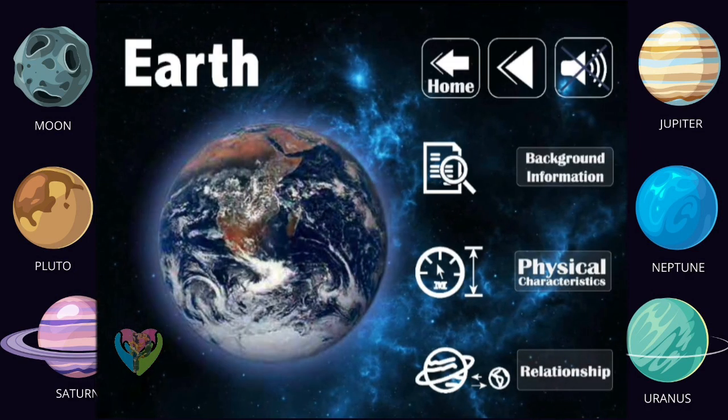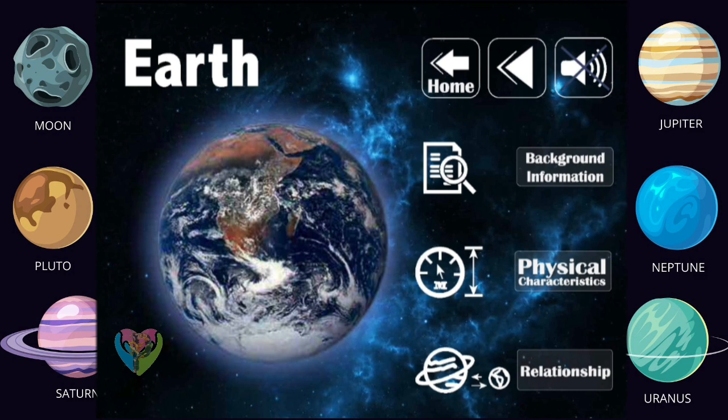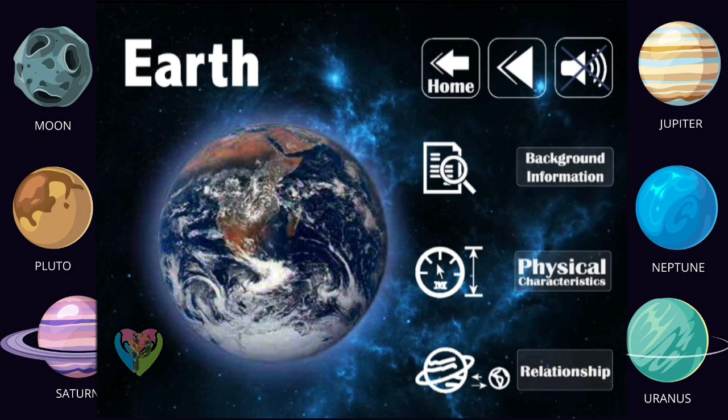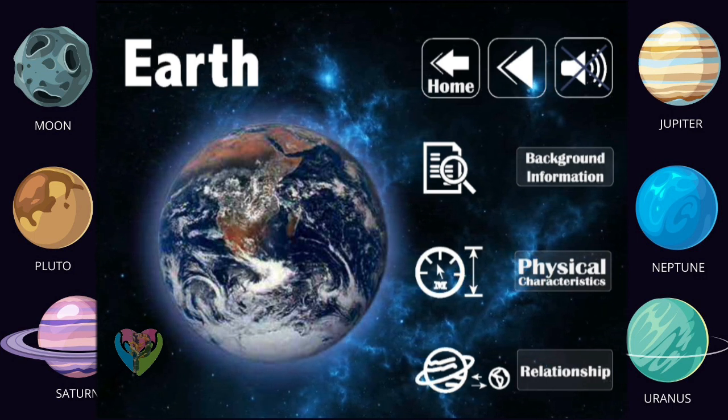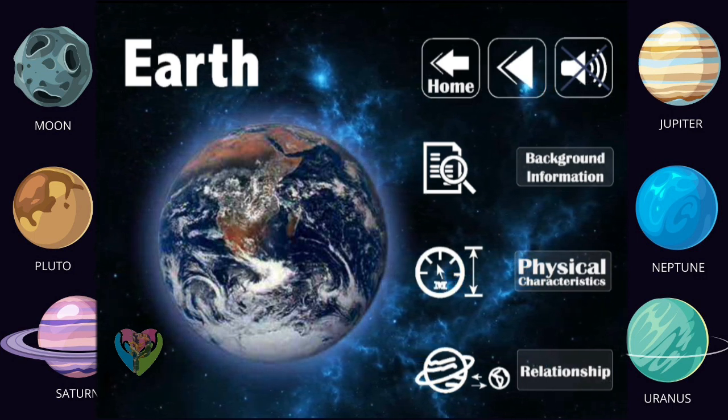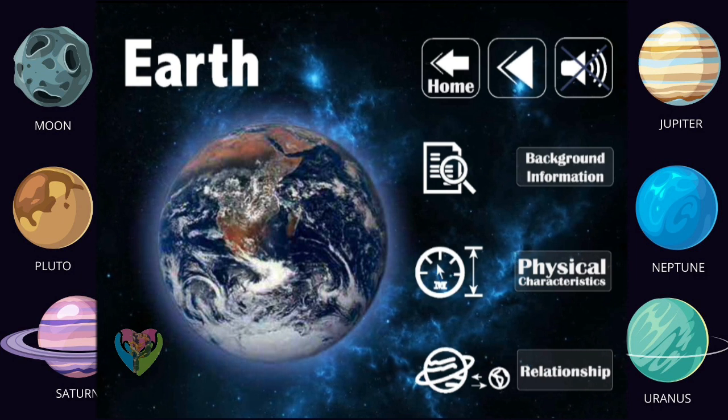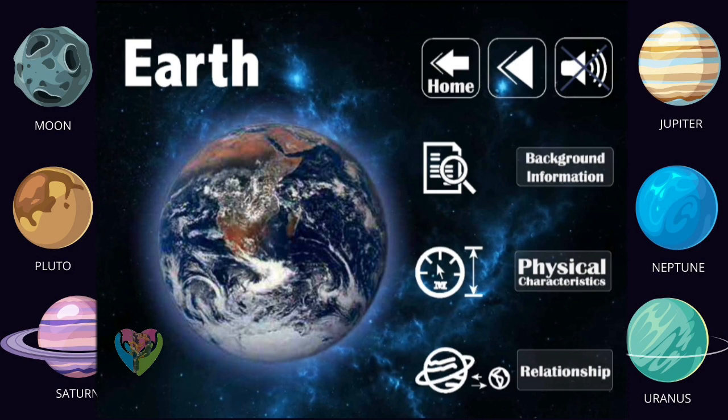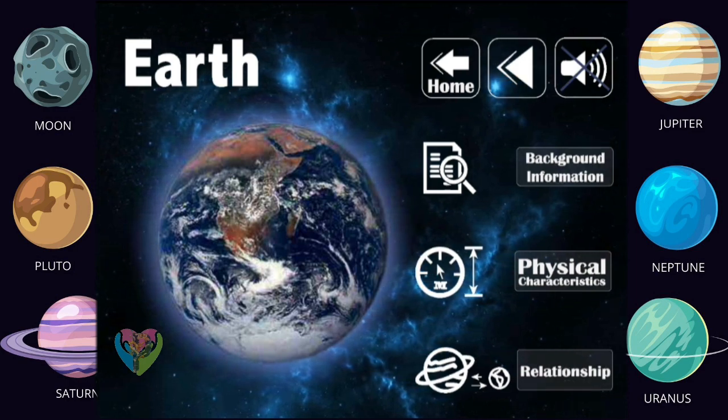Please select the top background information, history, discovery, and mythology. Physical characteristics, size, mass, natural satellites, and composition. The relationship of the solar system occurs to the orbital distance, mass, and size comparison.